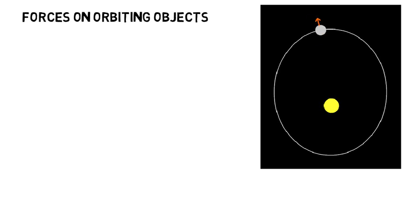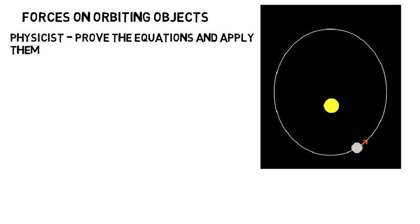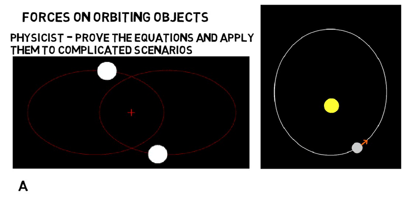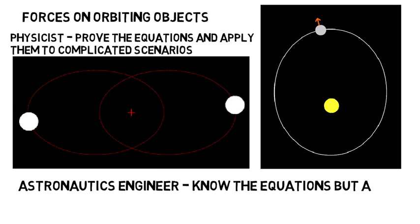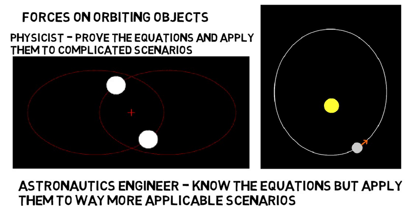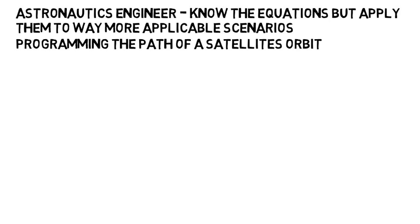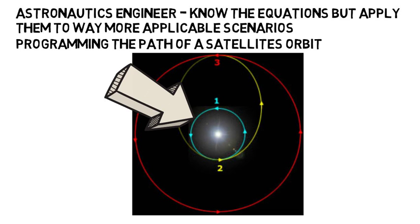A physicist would prove the equations and could apply them to complicated scenarios, whereas an astronautics engineer would just know the equations, but apply them to way more applicable scenarios, like programming the path of the satellite's orbit, or maybe determining how to get from one circular orbit to another.